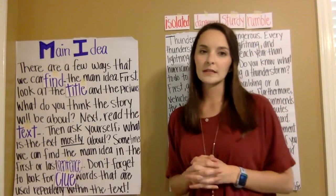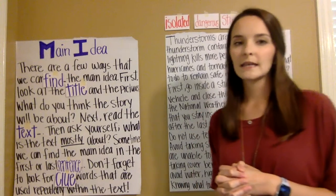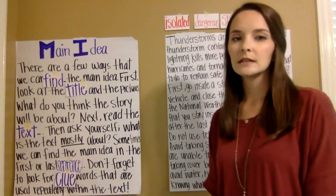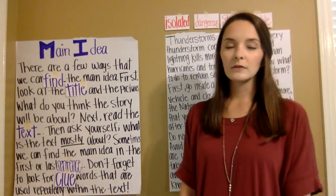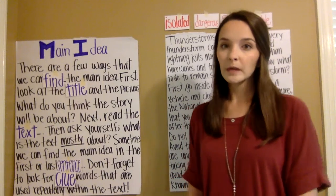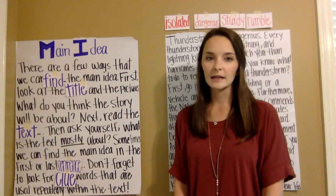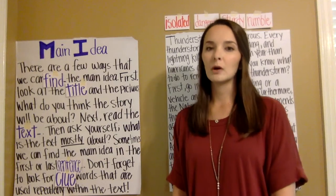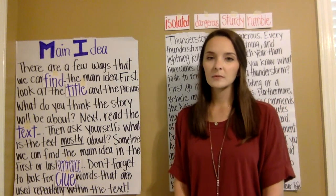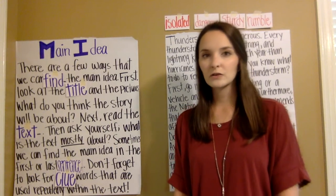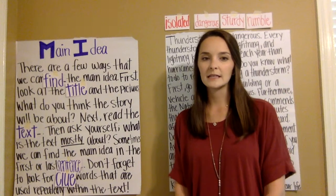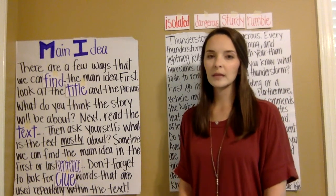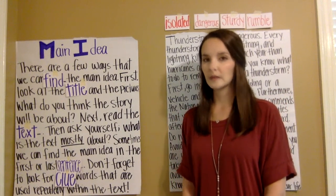And don't forget to look for clue words that are used repeatedly within the text. If a word is repeated over and over again in a text, it's usually a clue to what the whole text was about. So let's read the whole thing together: There are a few ways that we can find the main idea. First, look at the title and the pictures. What do you think the story will be about? Next, read the text. Then ask yourself, what is the text mostly about? Sometimes we can find the main idea in the first or the last sentence. And don't forget to look for clue words that are used repeatedly within a text.